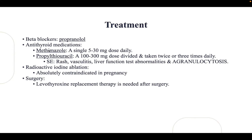Antithyroid medications are used to decrease hormone synthesis. Radioactive iodine ablation works by destroying the gland and is absolutely contraindicated in pregnancy. Surgery is an option to remove the gland, but levothyroxine replacement therapy is needed afterward. Since all drugs cross the placenta, definitive surgery is recommended for females who plan to get pregnant.